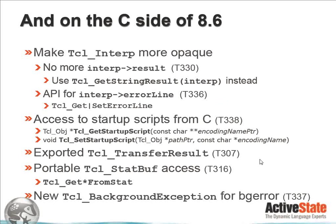On the C side for 8.6, there has been more effort to make the Tcl interp structure opaque. In 8.6, there is no more access to the interp result element directly. You now have to use Tcl_GetStringResult or Tcl_GetObjResult if using Tcl objects, which is the better way. There is also now an API for interp error line — get or set error line — so that no more direct access to the Tcl interp structure should be necessary. A full set of C APIs is available to access the bits you need.